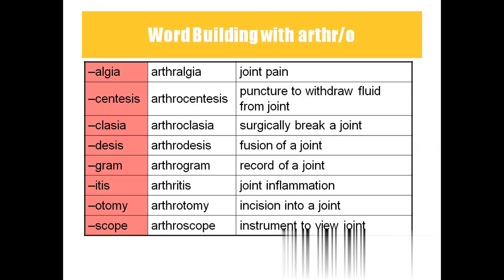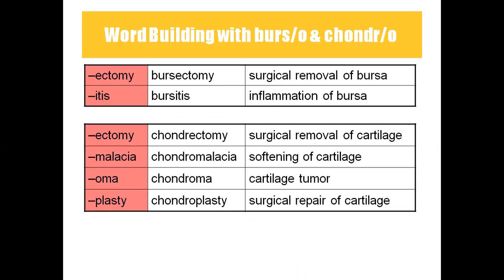Arthritis means inflammation of the joint. We have rheumatoid arthritis and osteoarthritis — in all these cases, the inflammation of the joint will take place. Arthrotomy means incision into the joint. And arthroscope is the instrument to view the joint.